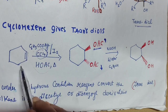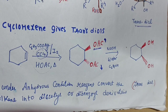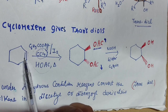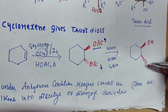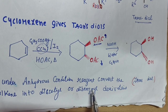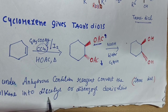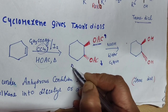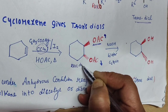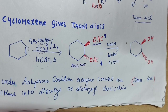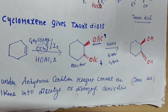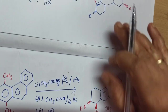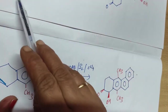So the main outcome is that any alkene gets converted to diols. Under anhydrous conditions, the reagents convert the alkene into a diacetyl or dibenzoyl derivative, and after base hydrolysis, it gets converted to trans-diols. Another example: if we take any compound with a specific double bond and treat it with the Prévost reagent, the double bond is replaced with trans addition of OH groups.